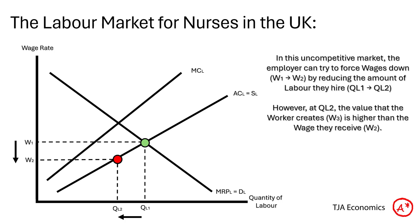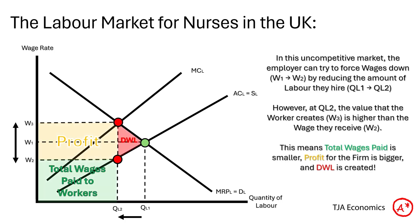However, at QL2 the value that worker creates — W3 — is actually higher than the wage they're receiving, W2. That means the green box of total wages paid is much smaller. There is a profit that the firm receives and there's even a triangle of deadweight loss. The yellow profit box comes from the fact that workers are creating value W3 for the firm but are only being paid W2, so the difference between those two is what the firm receives as profit.